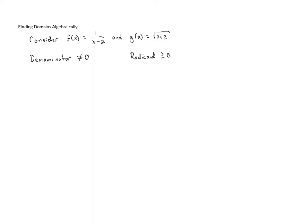Let's look first at f of x. We have f of x equals 1 over x minus 2. We know the denominator cannot equal zero. The denominator here is x minus 2, so we know that x minus 2 cannot equal zero. To get x alone, we add 2 to both sides of the inequality, leaving us with x cannot equal 2. That is the restriction for our domain.